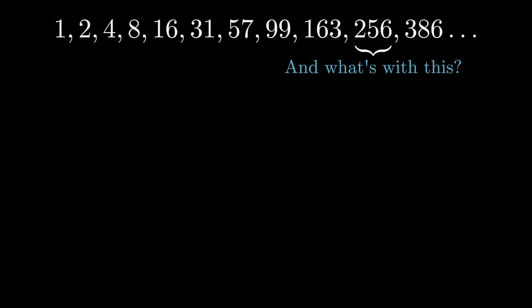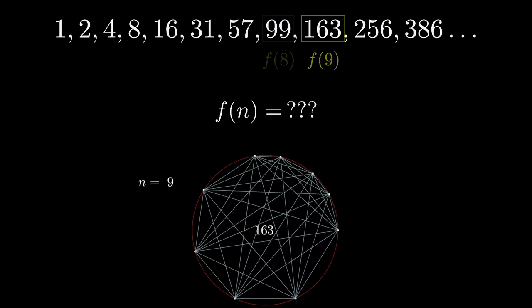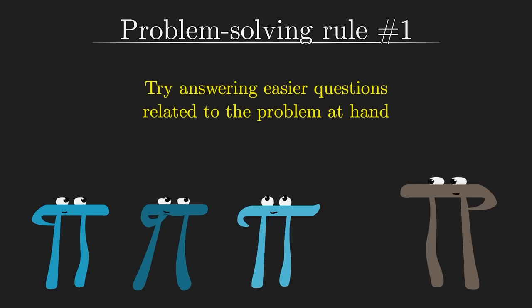So we've got this pattern, and what you want to find is what function describes it. If you put n points on the boundary of a circle, and you connect them with all the possible chords, and you count how many regions the circle has been cut into, if the answer isn't a power of two, what is it? What function of n should we plug in? As always with math, problem-solving rule number one, if you're stuck, is to try solving easier questions somehow related to the problem at hand. It helps you get a foothold, and sometimes those answers are helpful in the final question.